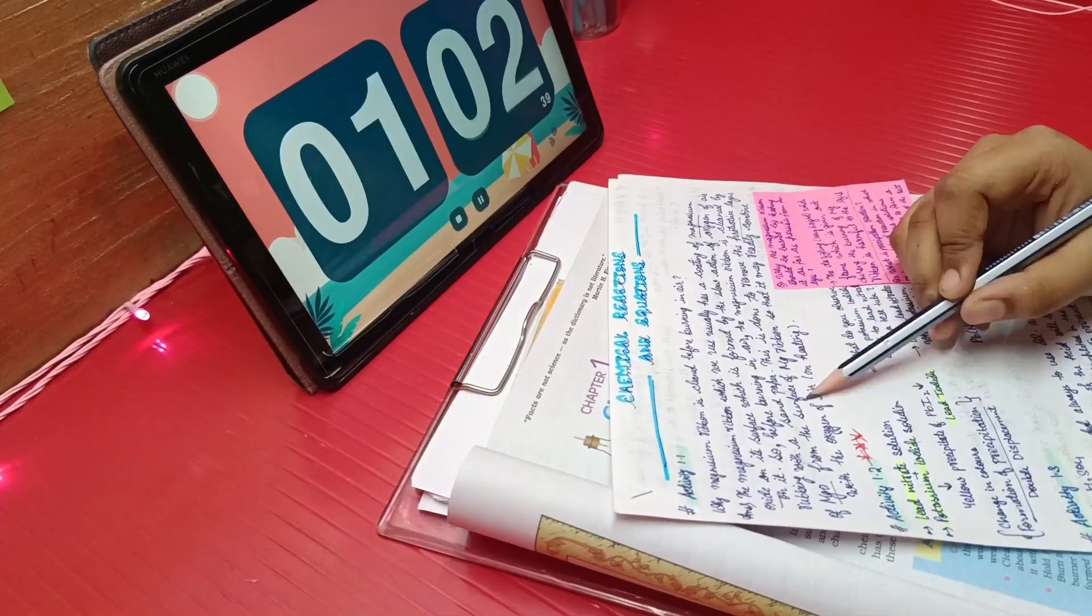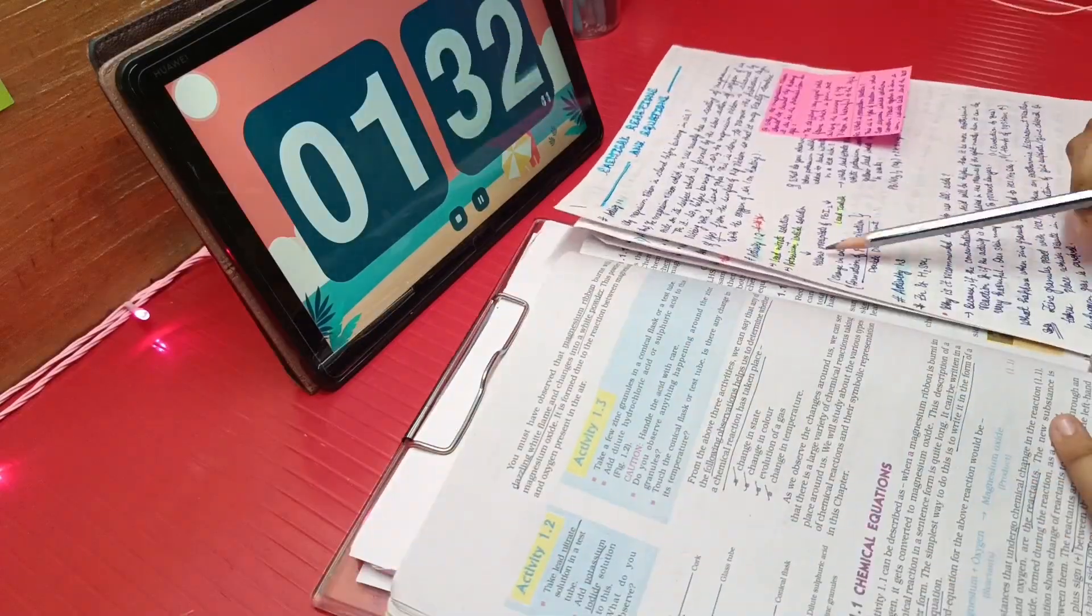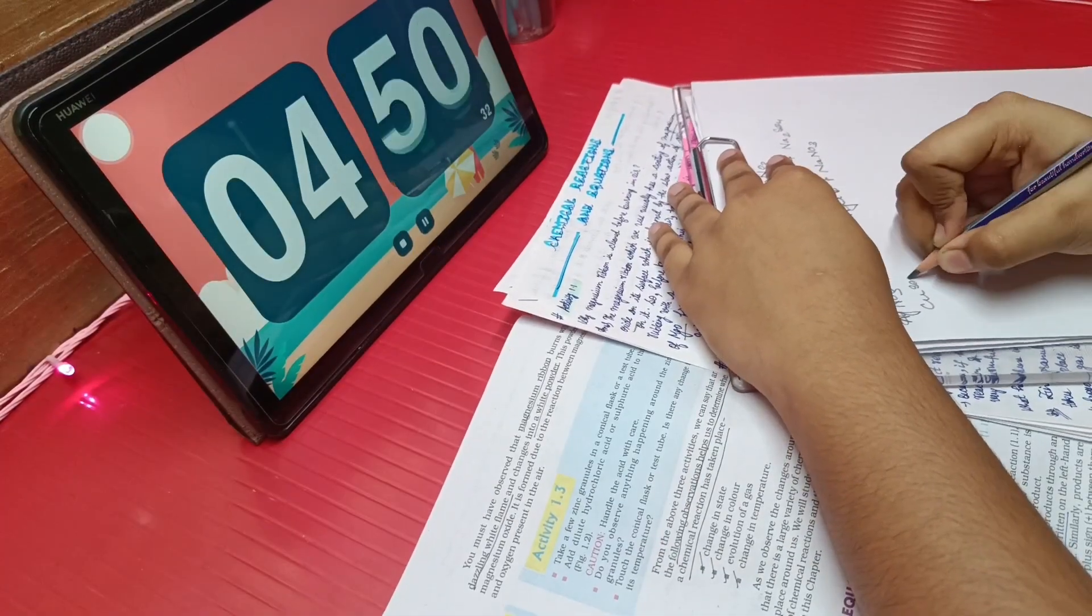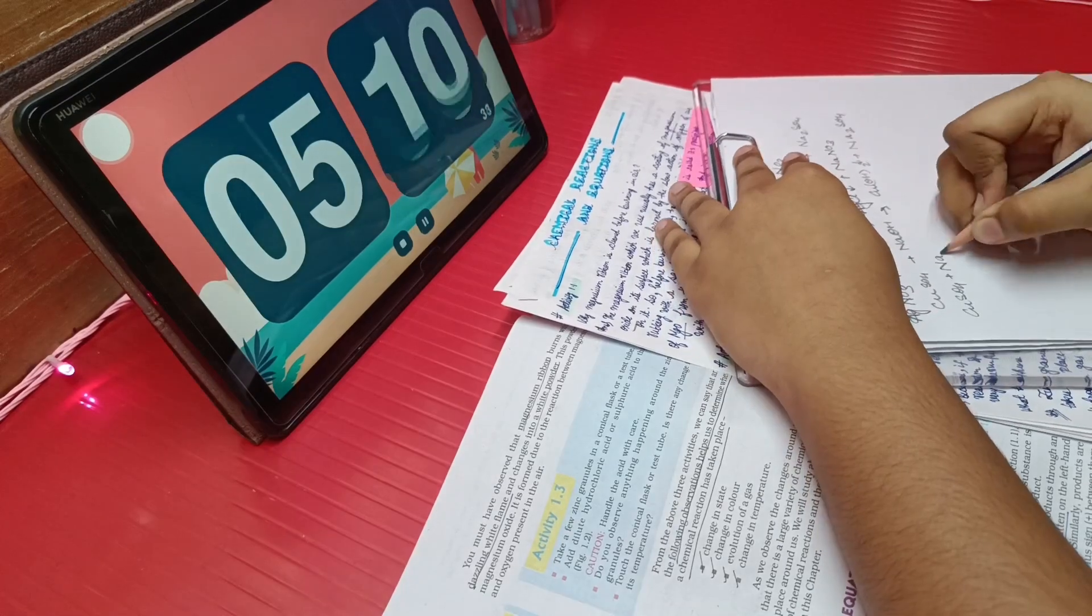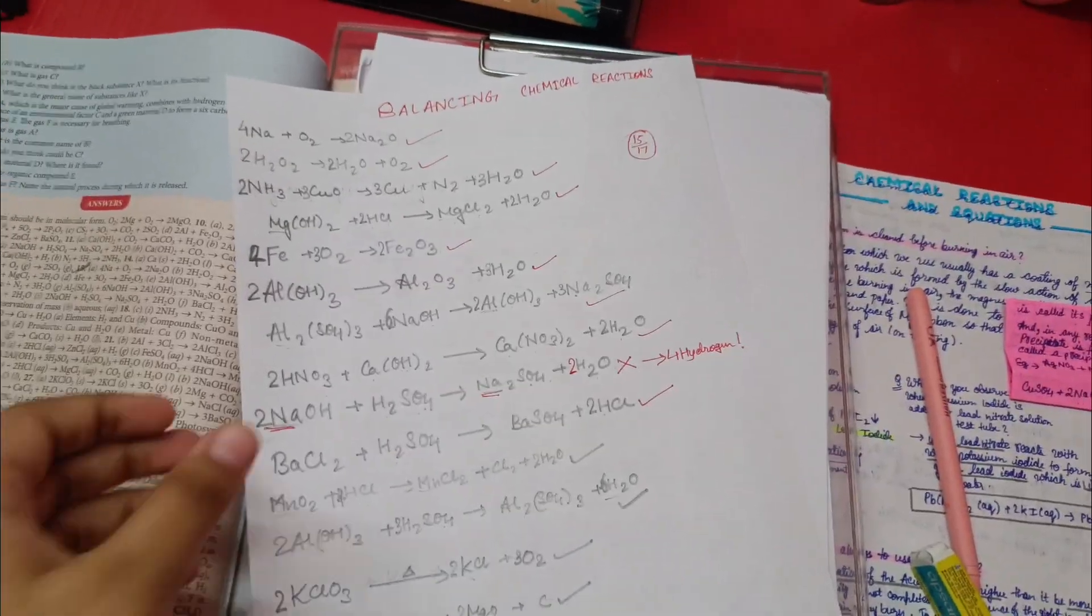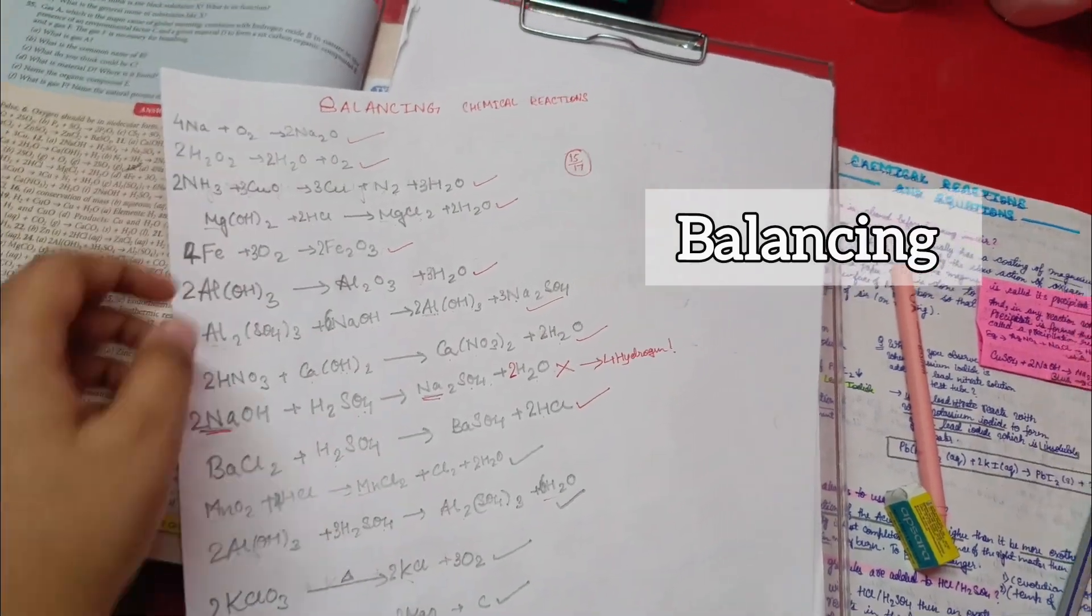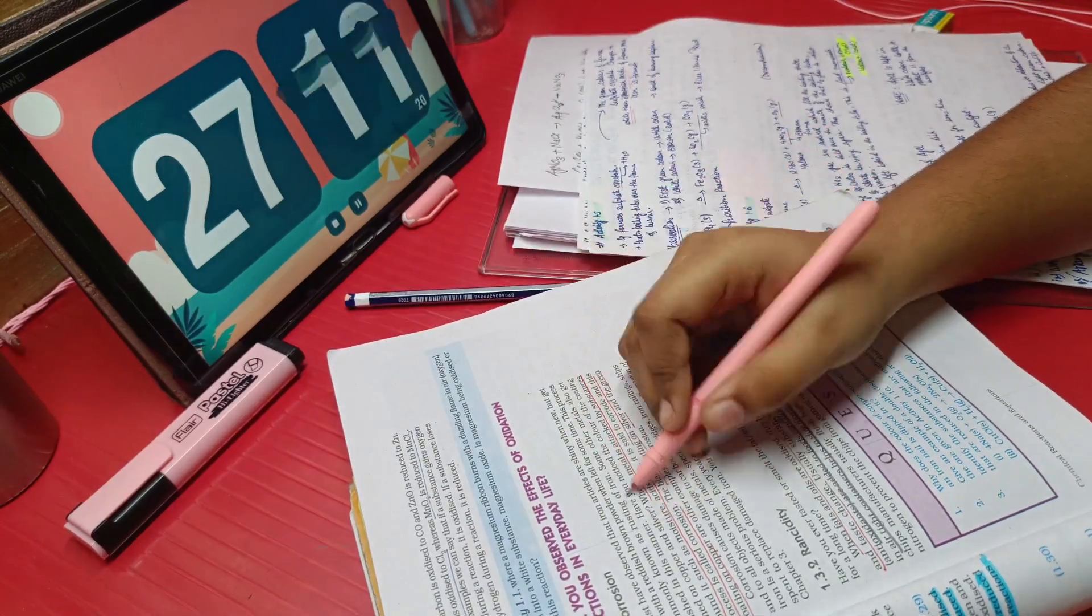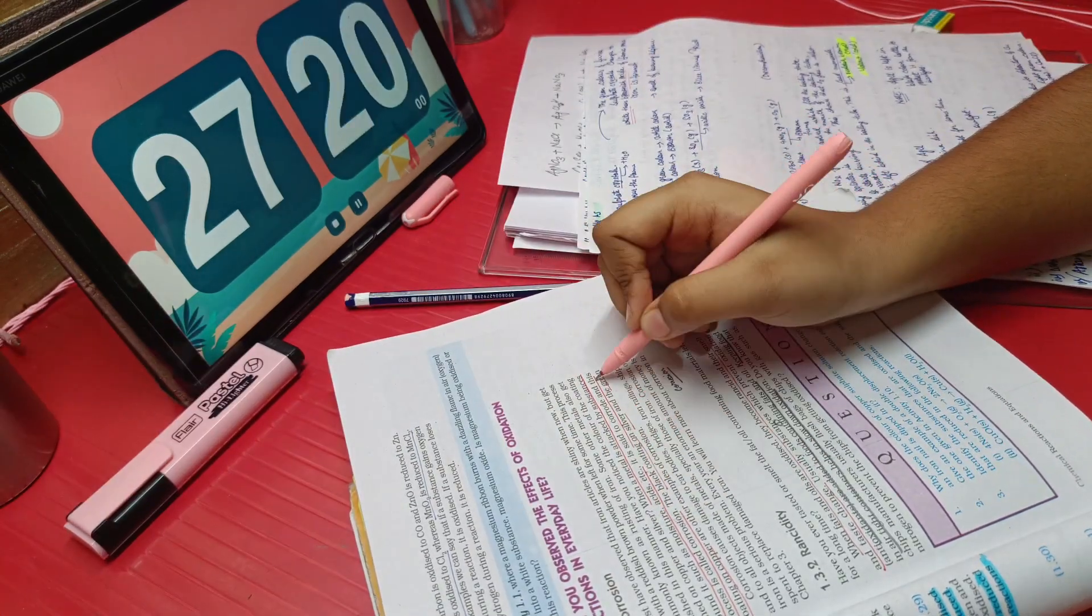I have completed carbon and its compounds. Now, I was doing the chapter Chemical Reactions and Equations. There are a lot of activities in this chapter, so I will suggest you to write them in a sheet of paper. I also practiced some questions of balancing. And it took me around 16 minutes to do the stuff. And here I was revising the last topic that is corrosion.